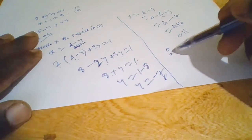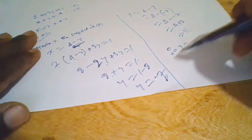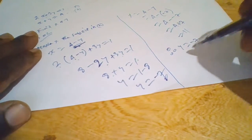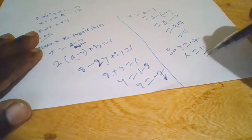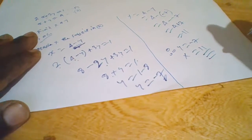Therefore, y equals negative 7, x equals 11. Thank you for watching.